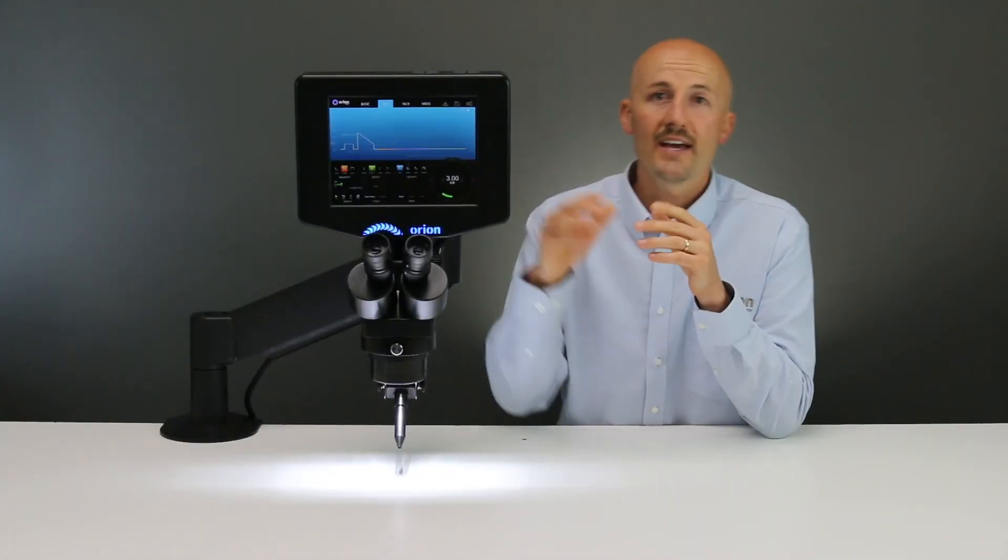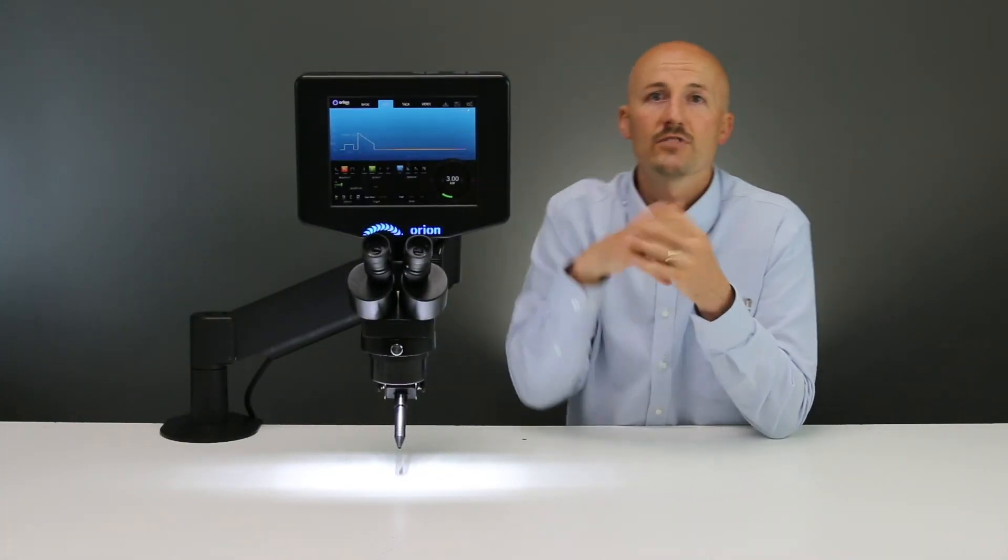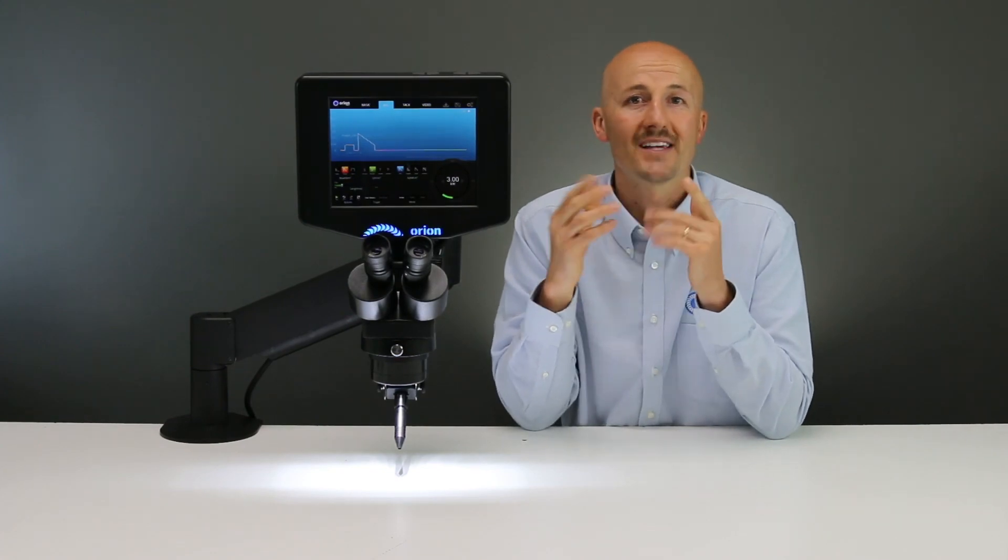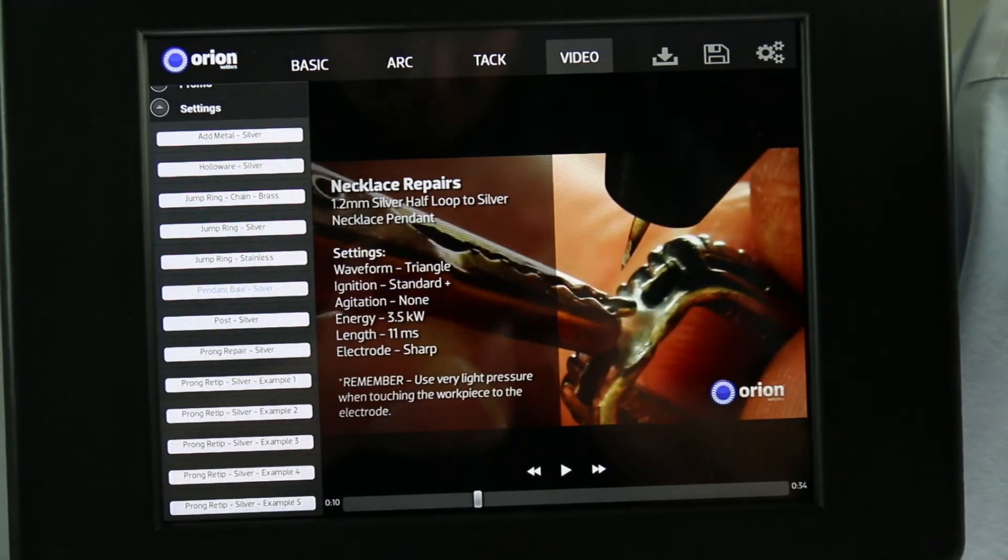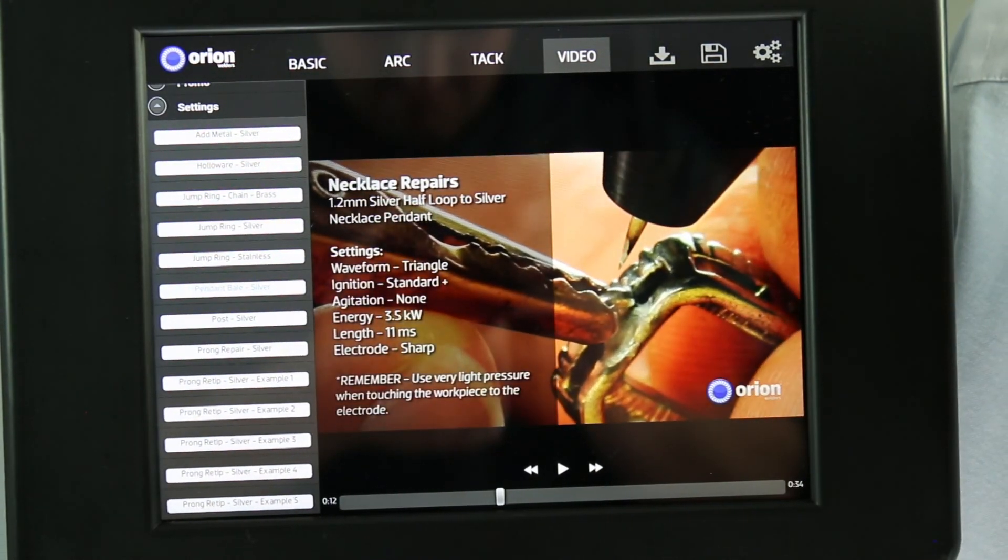You also get a 10-inch full-color display that provides you with the basic welding selection mode, training videos, and the ability to adjust all your settings at the touch of a button.